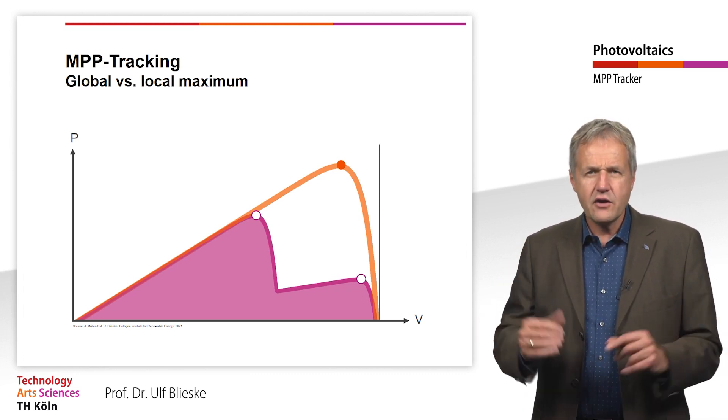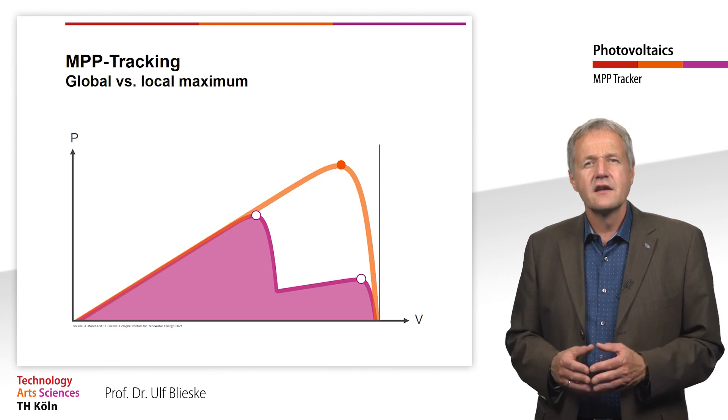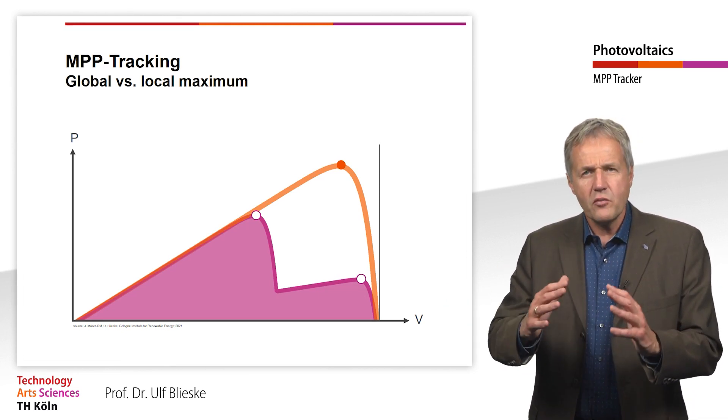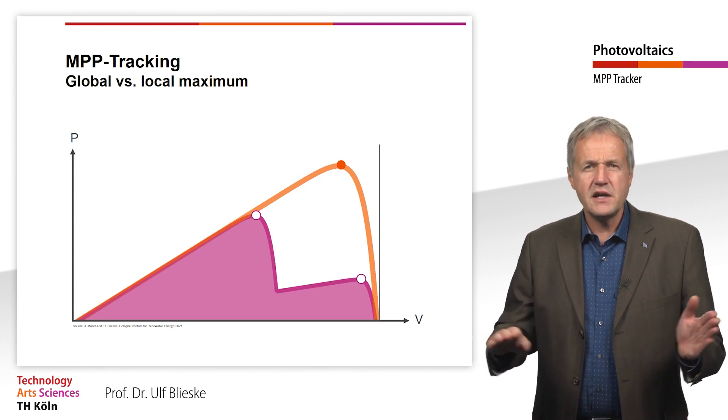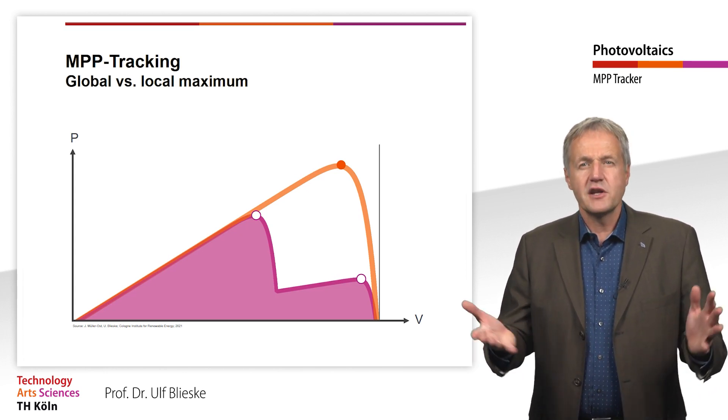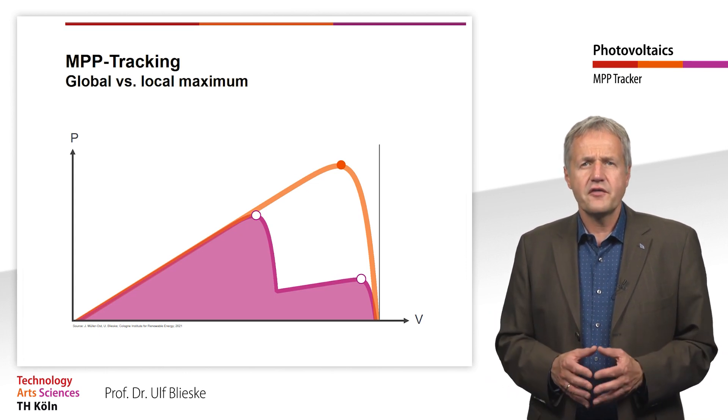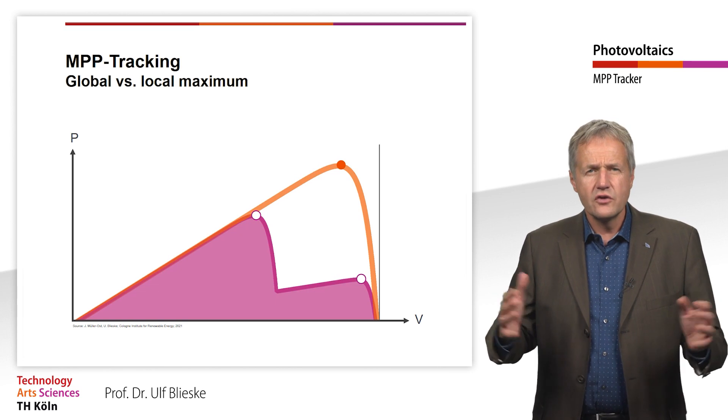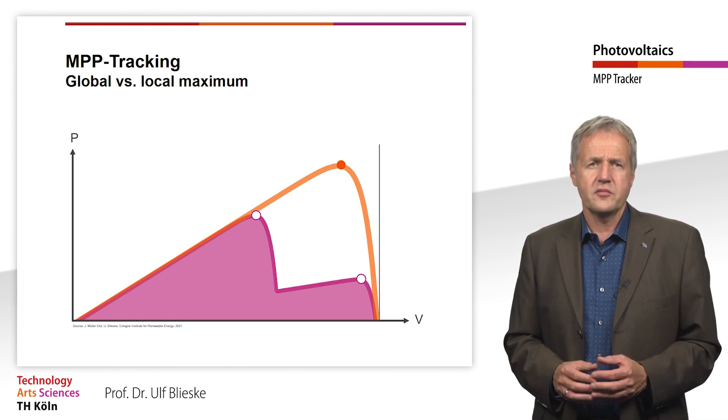While the IV curve is being fully scanned, the PV module is only operated for a short moment in the MPP, which inevitably leads to losses. Therefore, the frequency of these large scan loops is chosen to be as low as possible.